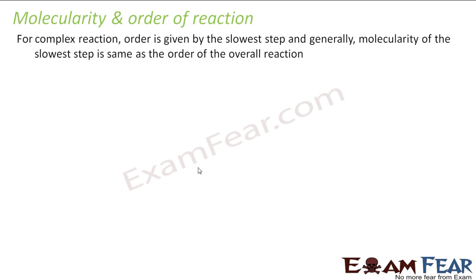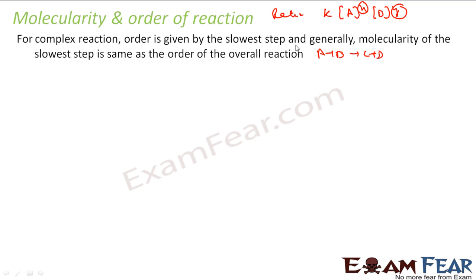We have seen that the order of a reaction is given by: rate = k[A]^x [B]^y for a reaction A + B → C + D. These exponents x and y are experimental values. For a complex reaction with n steps, it is the slowest step that gives you the values of x and y — the coefficients of A and B in the slowest step are nothing but x and y.